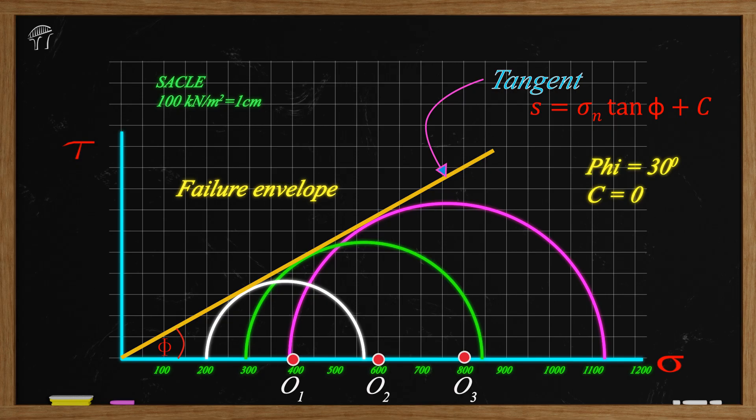This is how we draw the Mohr circle and this is done only for total stress parameter. If you want to draw the Mohr circle and determine effective values of C and phi, I have given a procedure for that in a pdf. You can find that pdf in the description. This is all I had in this video tutorial. I'll see you guys in the next video.